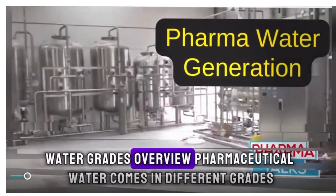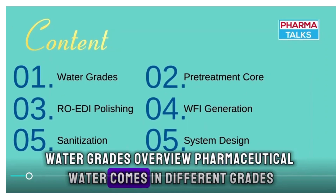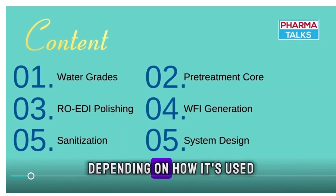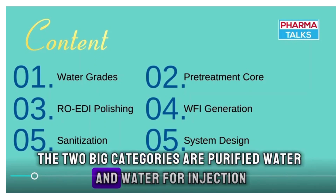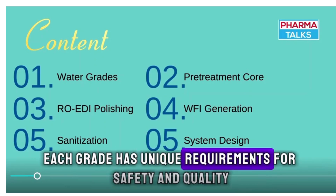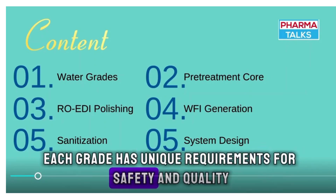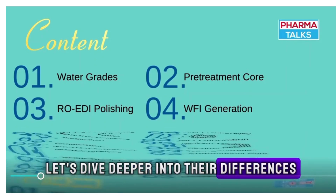Pharmaceutical water comes in different grades depending on how it's used. The two big categories are purified water and water for injection. Each grade has unique requirements for safety and quality. Let's dive deeper into their differences.